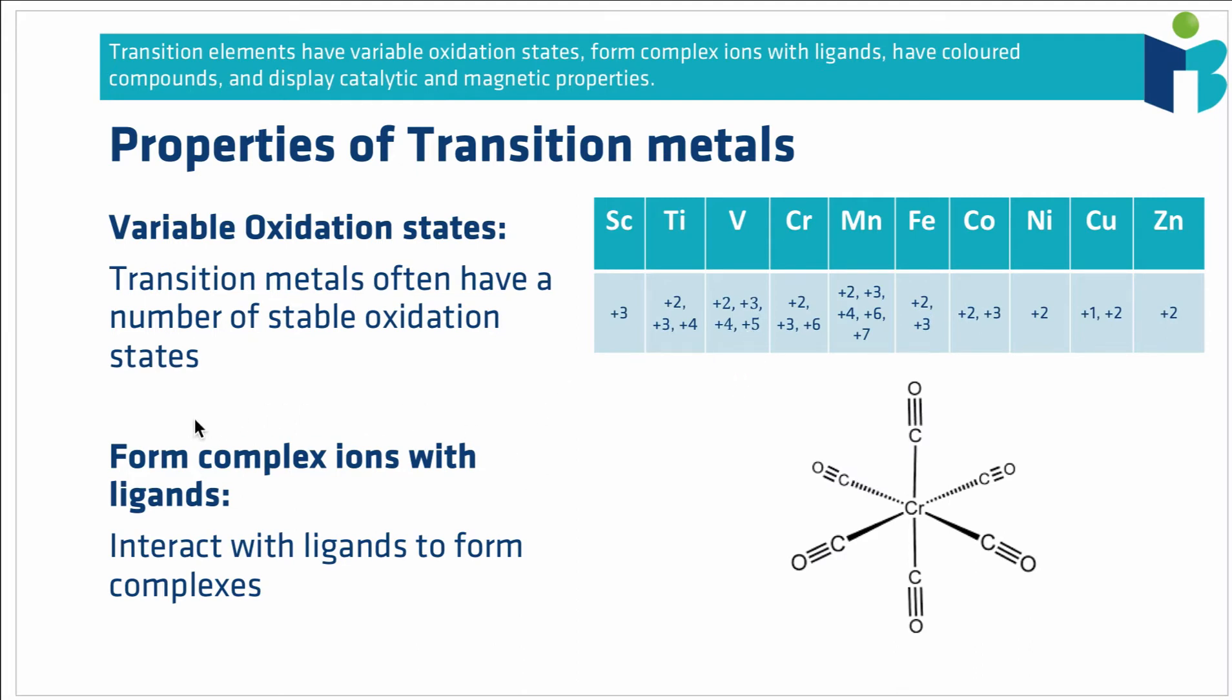Secondly, a property that we find is that transition metals generally form complex ions with ligands. What that means is if you put these transition metals into solution with some species called a ligand, you find that they form some kind of a covalently bonded network. Now a full explanation of this is given in the following video. So for now you just need to remember that transition metals form complex ions with ligands.